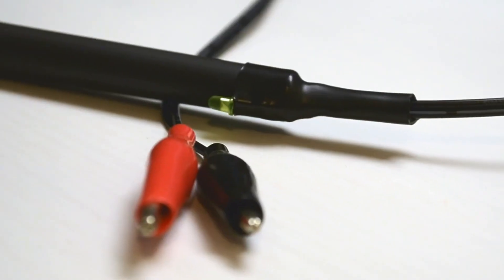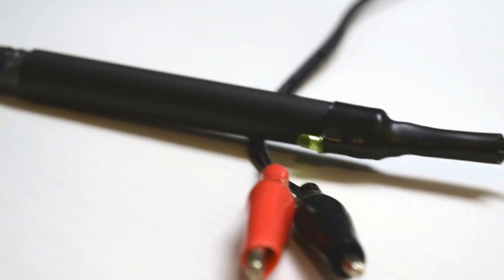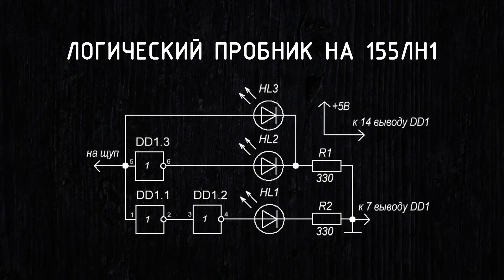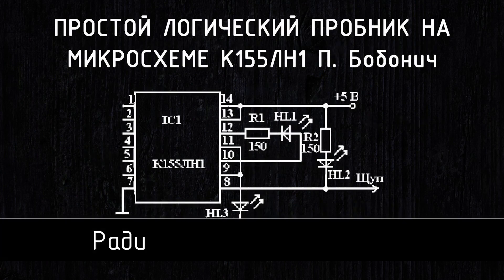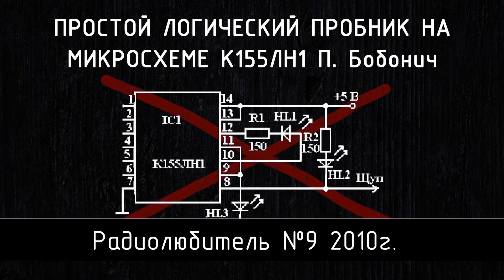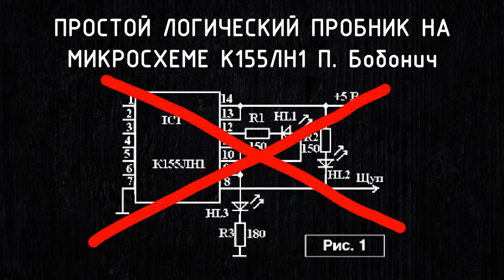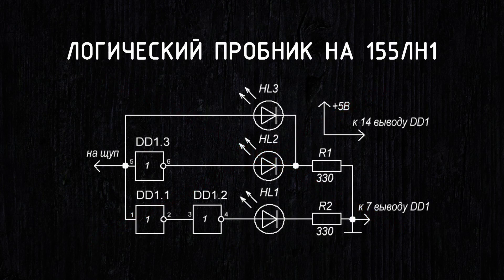The last circuit is a simple logic probe that will help you with the setup and repair of circuits on logic elements. Initially, I assembled this circuit from issue 9 of the Radio Amateur magazine, from the year 2010. However, there was clearly a mistake by the author. But I liked the idea, and my version of the logic probe circuit, which already works, was created.